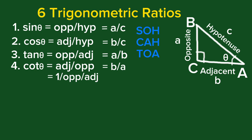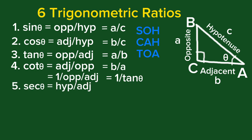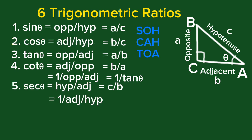Number five: secant theta is hypotenuse over adjacent, that is C over B. Let us compare this to cosine theta, which is adjacent over hypotenuse. Secant theta is a reciprocal of cosine theta. We write it as 1 over (adjacent over hypotenuse), and this is 1 over cosine theta.